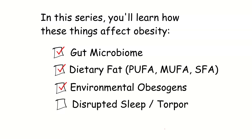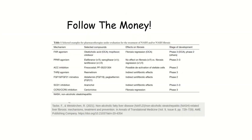Disrupted sleep and torpor — if you upset your circadian rhythms, how does that affect your metabolic health? That's in there too. And we're going to follow the money. This is a table of late-stage trials that pharmaceutical companies are actively doing, spending tens of millions of dollars on to try to combat fatty liver disease, which affects 35% to 40% of Americans. We're going to look at how they're spending their money, because that might give us some hints.